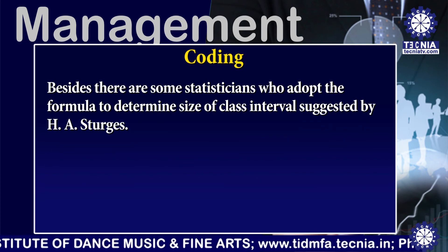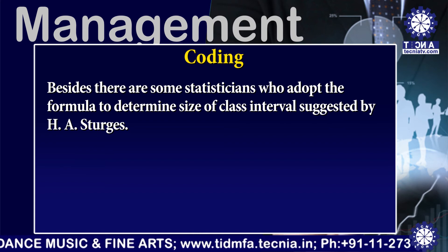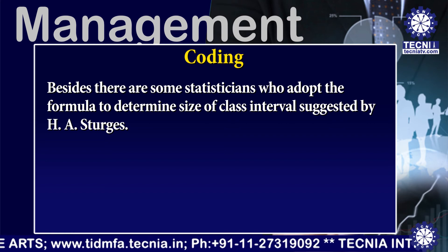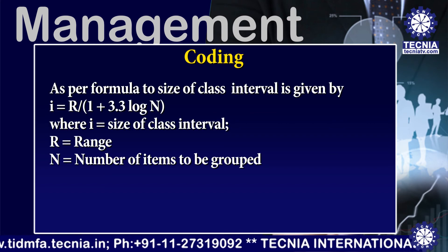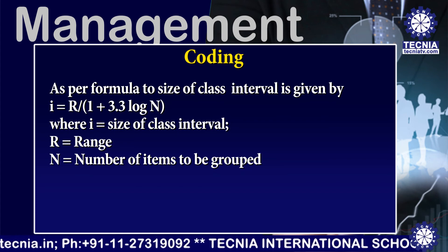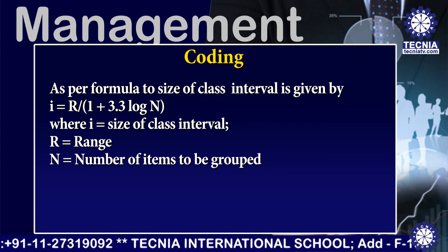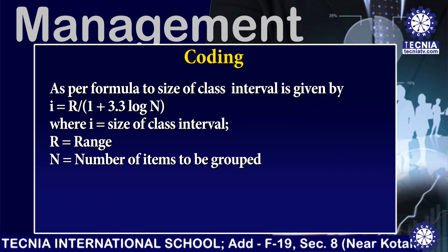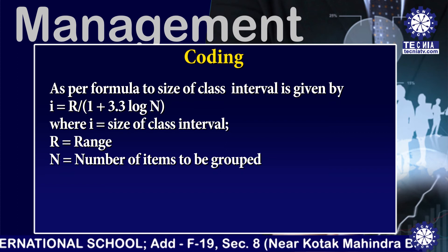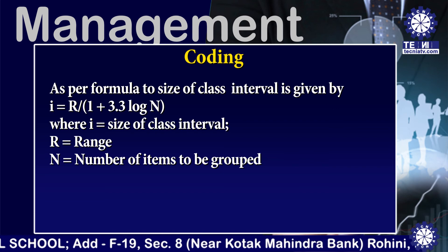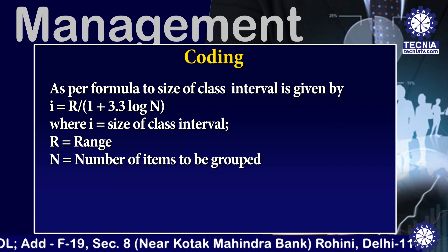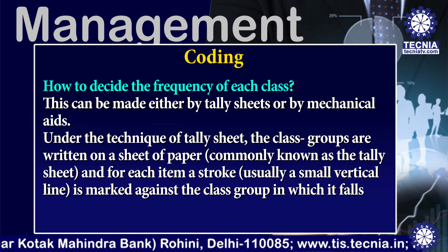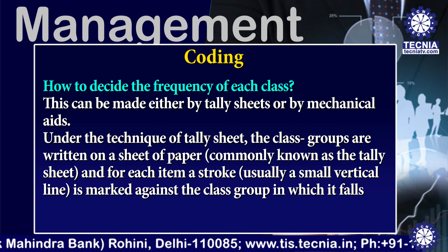There are some statisticians who adopt a formula to determine the size of class interval, suggested by H.A. Stewart. The formula for the size of class interval is: I = R / (1 + 3.3 log N), where I equals the size of class interval, R is the range, and N equals the number of items to be grouped. The frequency of each class can be determined either by tally sheets or by mechanical aids.